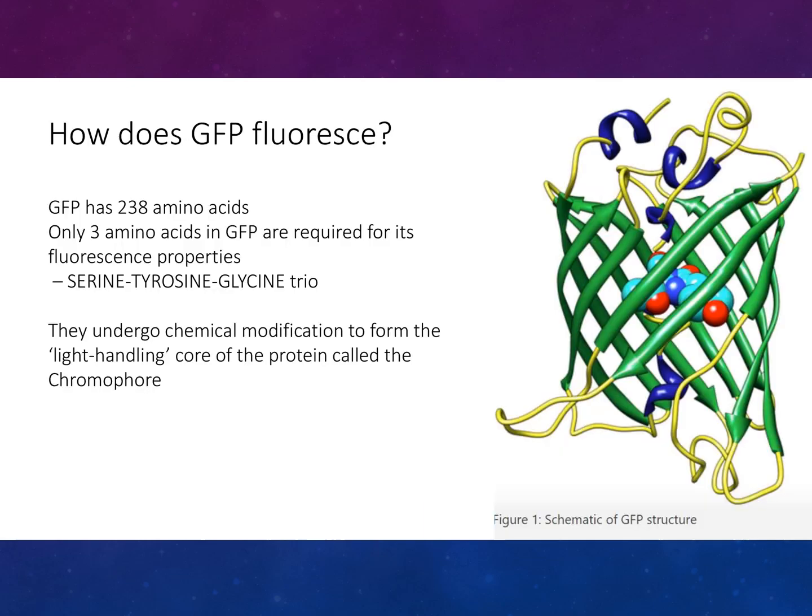So how does GFP fluoresce? GFP has 238 amino acids, but only three of those are required for its fluorescent properties: serine, tyrosine, and glycine. These undergo chemical modifications to form the light-handling core of the protein, called the chromophore.